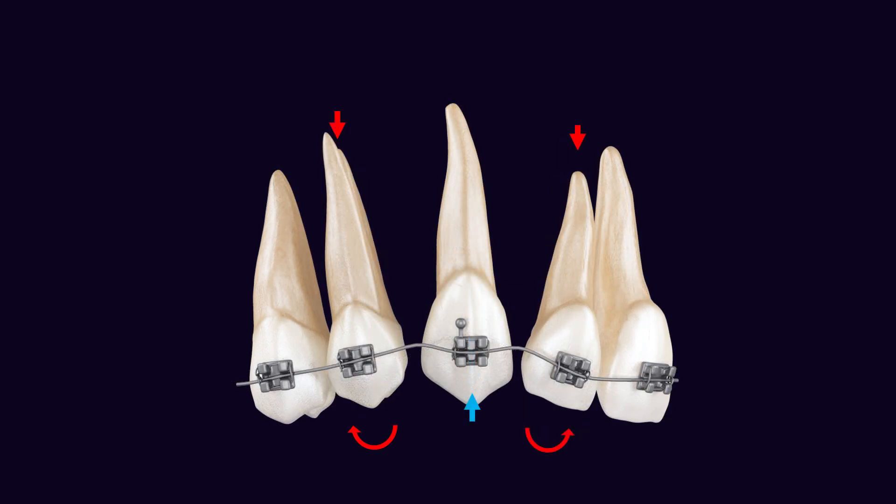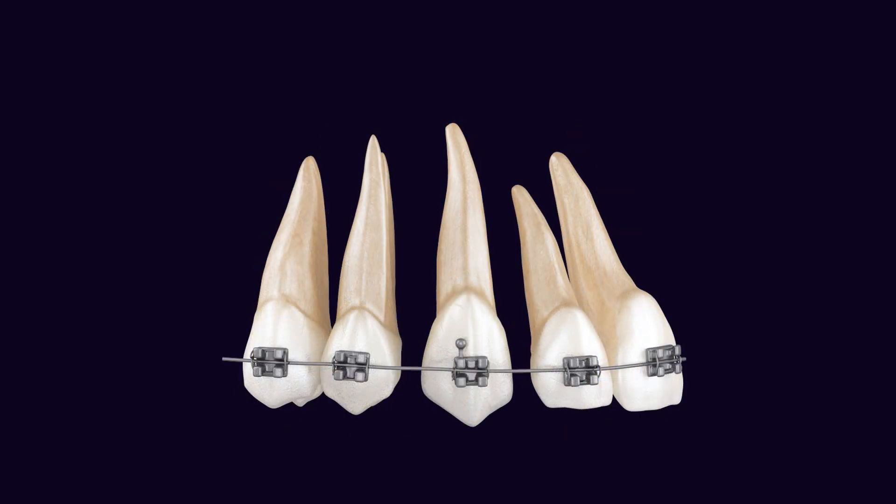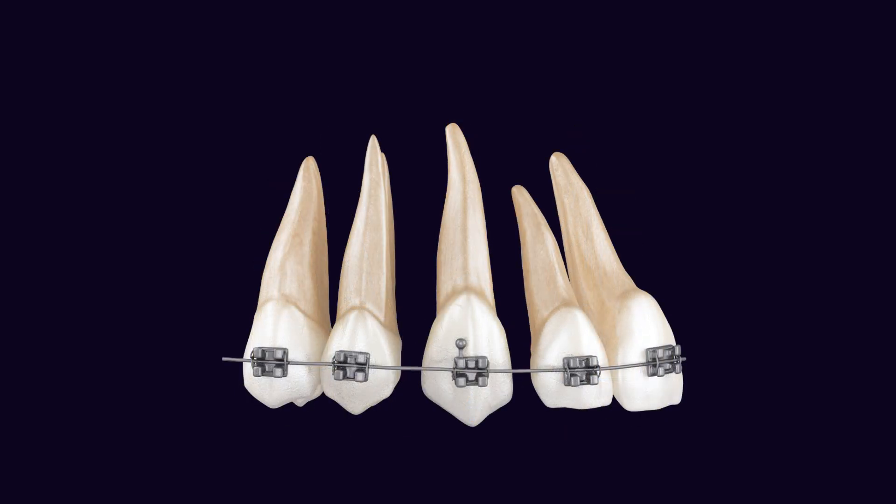Even though at the end you may get close to the movement you wanted, during this process the back-and-forth movement of the teeth unnecessarily can have biological side effects — for example, increased possibility of root blunting or root resorption. On the other hand, by proper design of your mechanics, you could prevent this type of side effects.